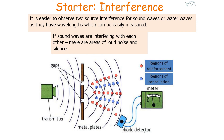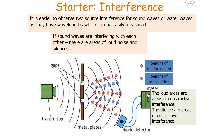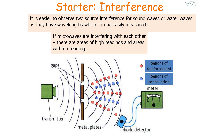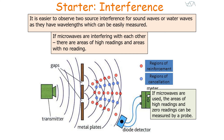If sound waves are interfering, you get areas of reinforcement — loud noise — and areas of cancellation — silence. The loud areas are constructive interference, whilst the silence is destructive interference. In an experiment, you can mark the positions of constructive and destructive interference regions, use a ruler to measure the spacing, and work out different wave values. For microwaves, you get areas of high readings where there is reinforcement and zero readings where there is cancellation. You can measure these with a probe and use the same methodology to determine wave properties.